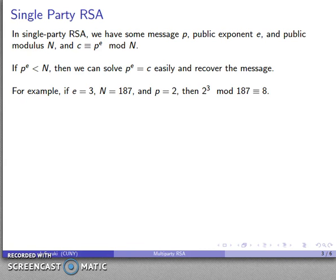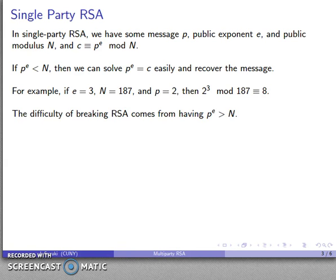For example, if my exponent is 3, my modulus is 187, and my message is 2, then 2 to the 3rd mod 187 is just 8. To recover the plaintext I take the cube root of 8. The difficulty of breaking RSA is when P to the power E is greater than our modulus n — then the modular arithmetic removes our ability to solve this equation easily.